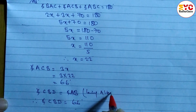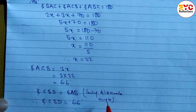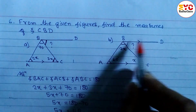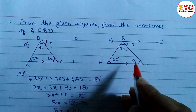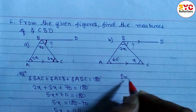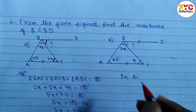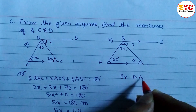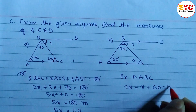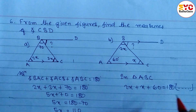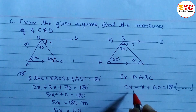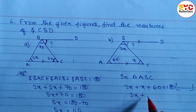Hope you understand this. Now look at question number B. Here also we have to find out angle CBD. When you add the three angles of the triangle we get 180 degrees. In triangle ABC, we can write 2x plus x plus 60 is equal to 180 degrees, because the sum of angles of a triangle is 180 degrees. Adding the like terms: 3x plus 60 is equal to 180 degrees.